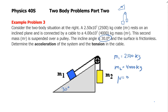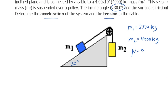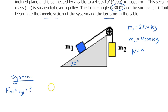We're going to do the same approach as before — figure out the acceleration and the tension. The first part is to think about the system. What is the F net of the system? The mass of the system will be these two added together, which is 6,500 kilograms, and then A equals F net over M.